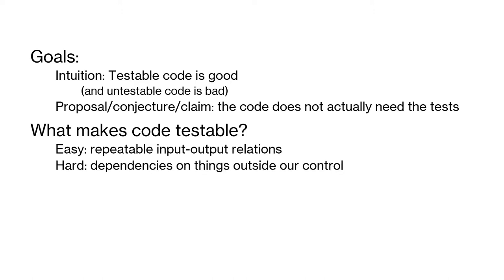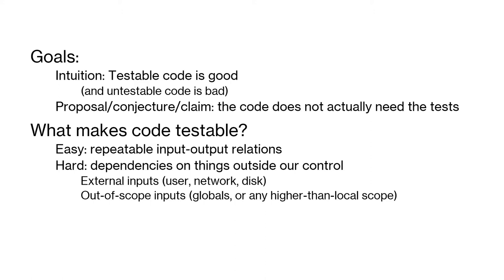And the hard part — what are these dependencies on the outside world? In this case we had global variables or outside-scope variables, but also external inputs like user input, network, or disk. If you need a user in order to test it, you need a user. If you need the network, your network needs to be working and configured correctly. And similarly for disk — you actually need things stored on disk.